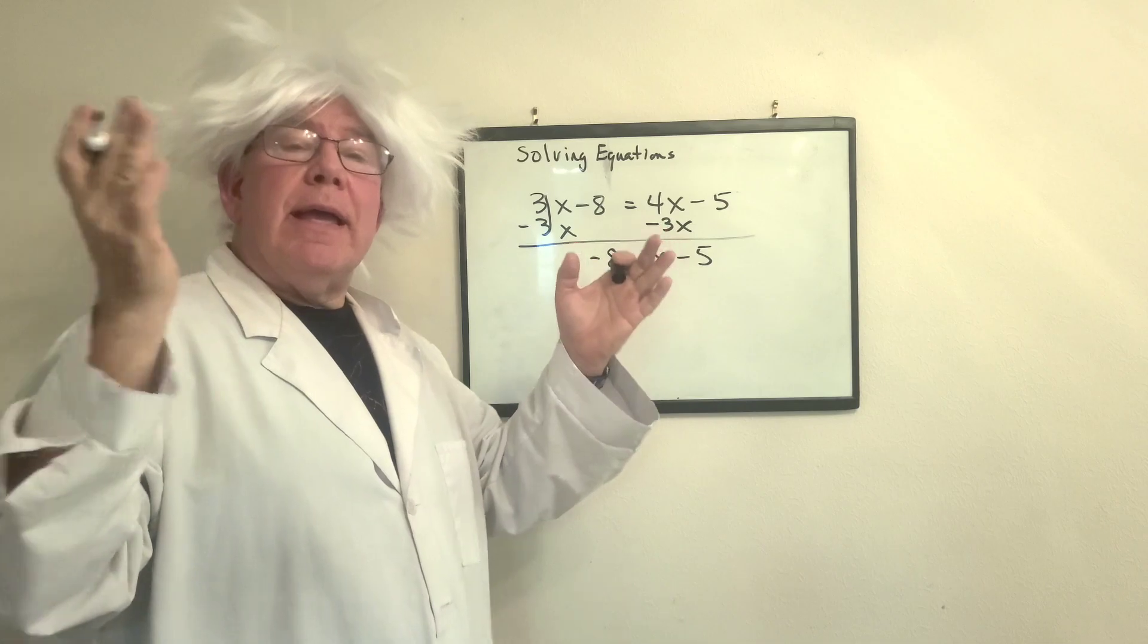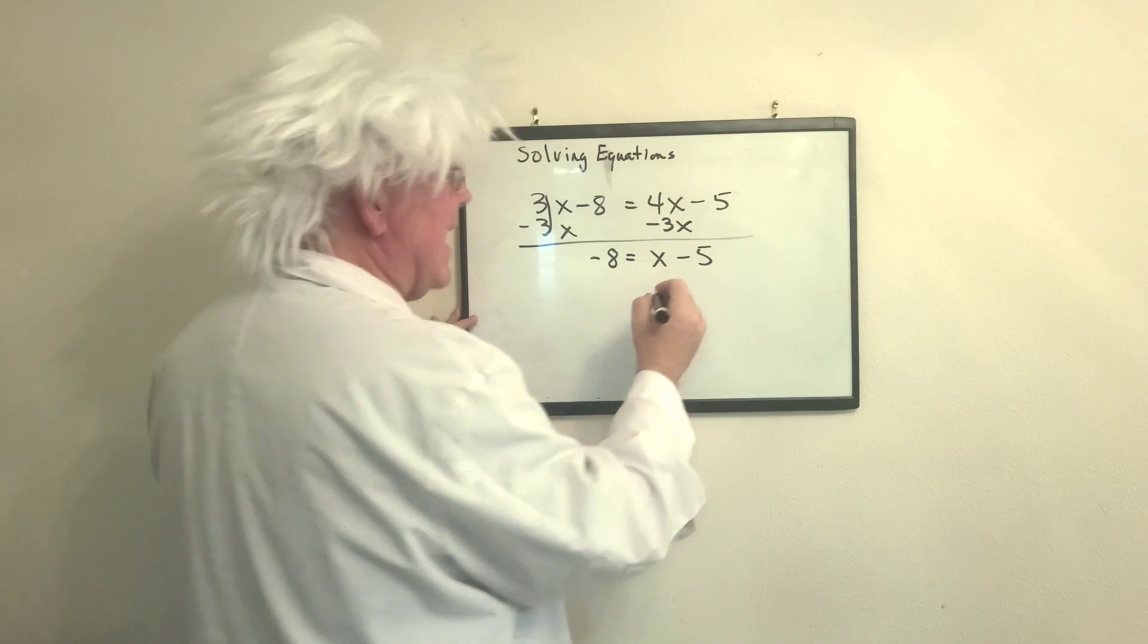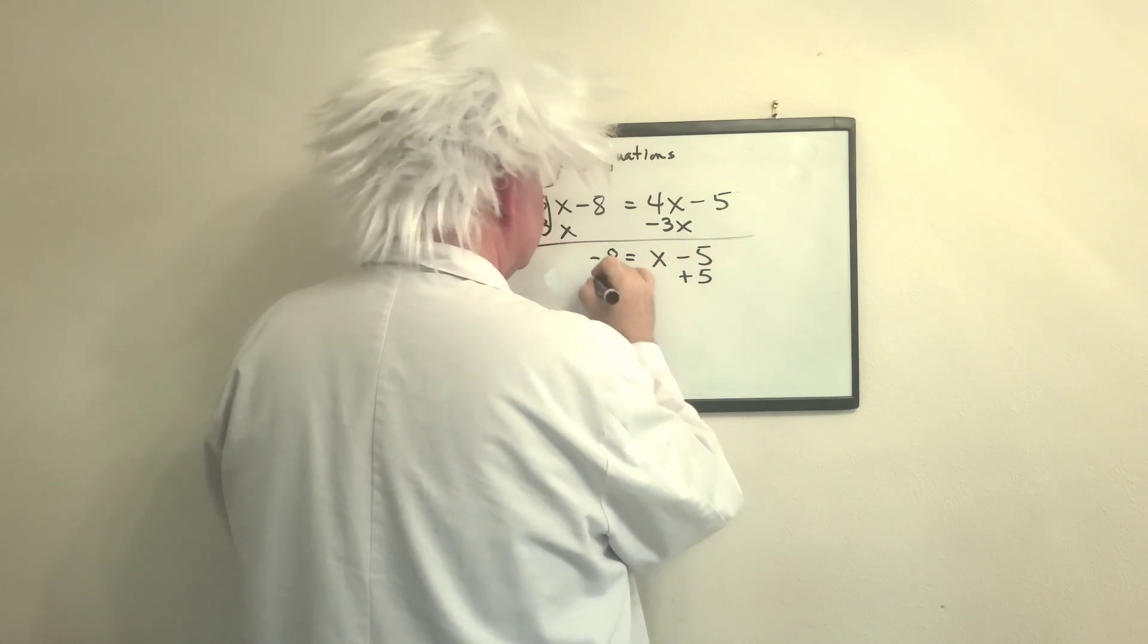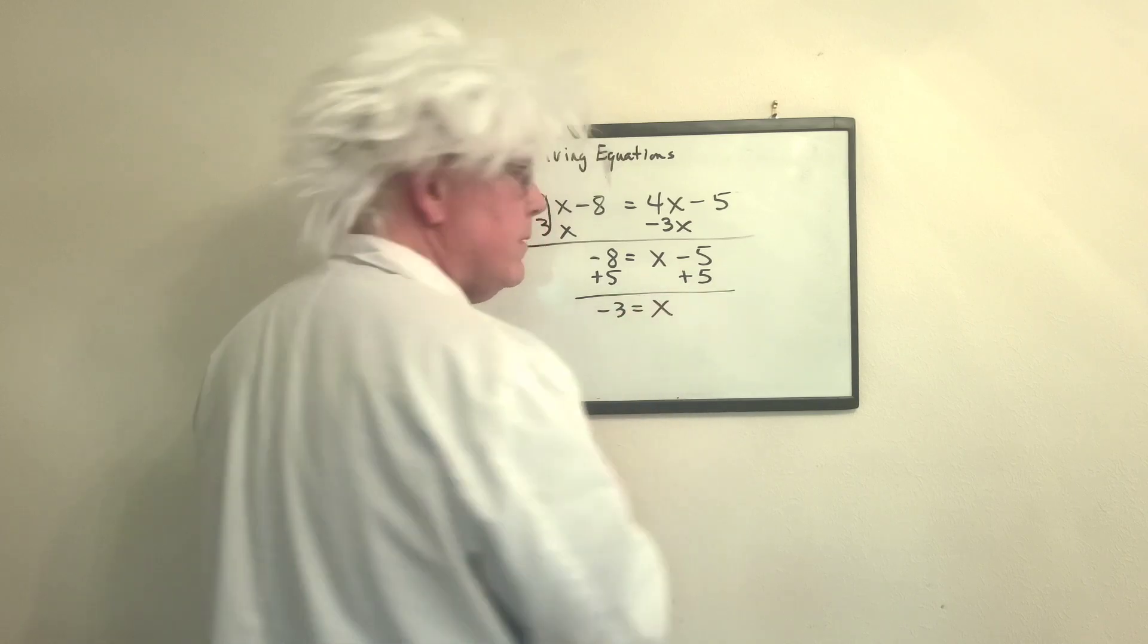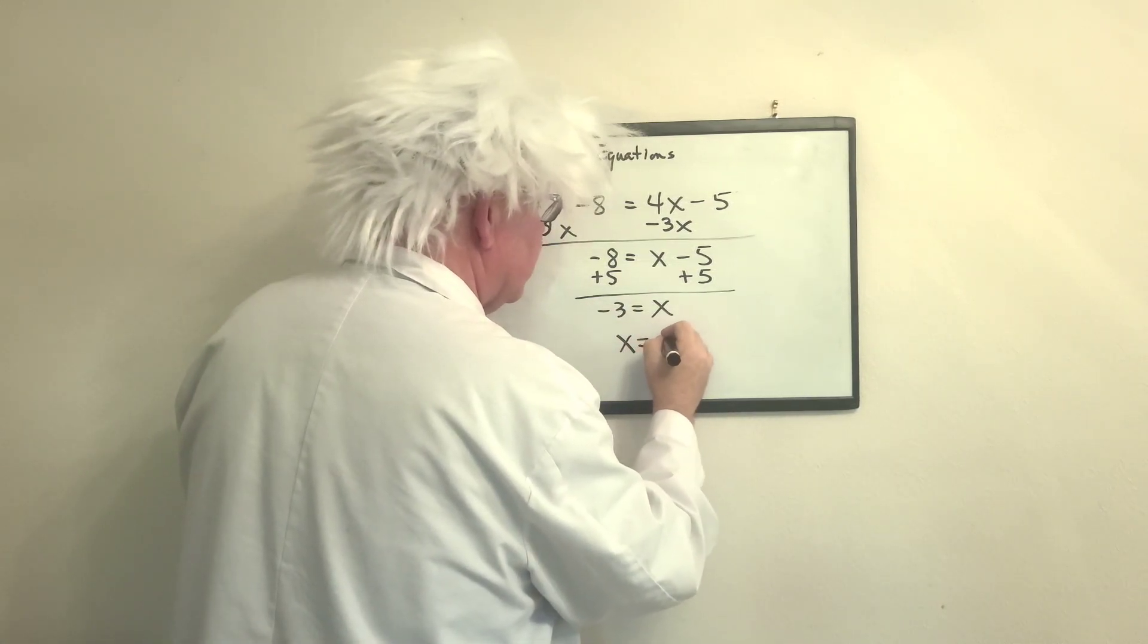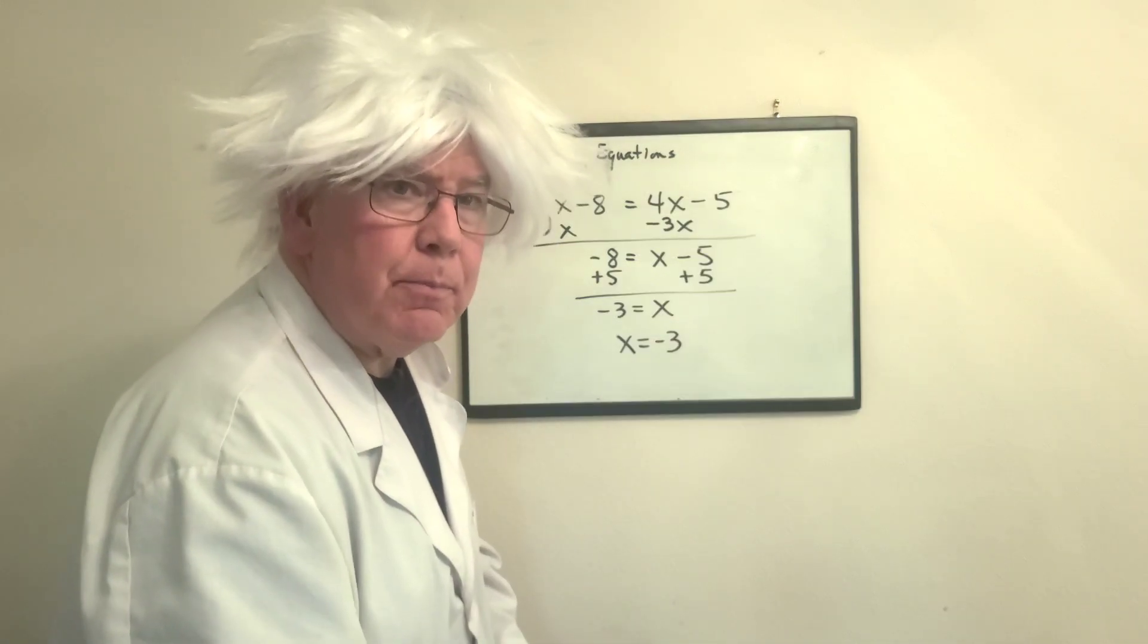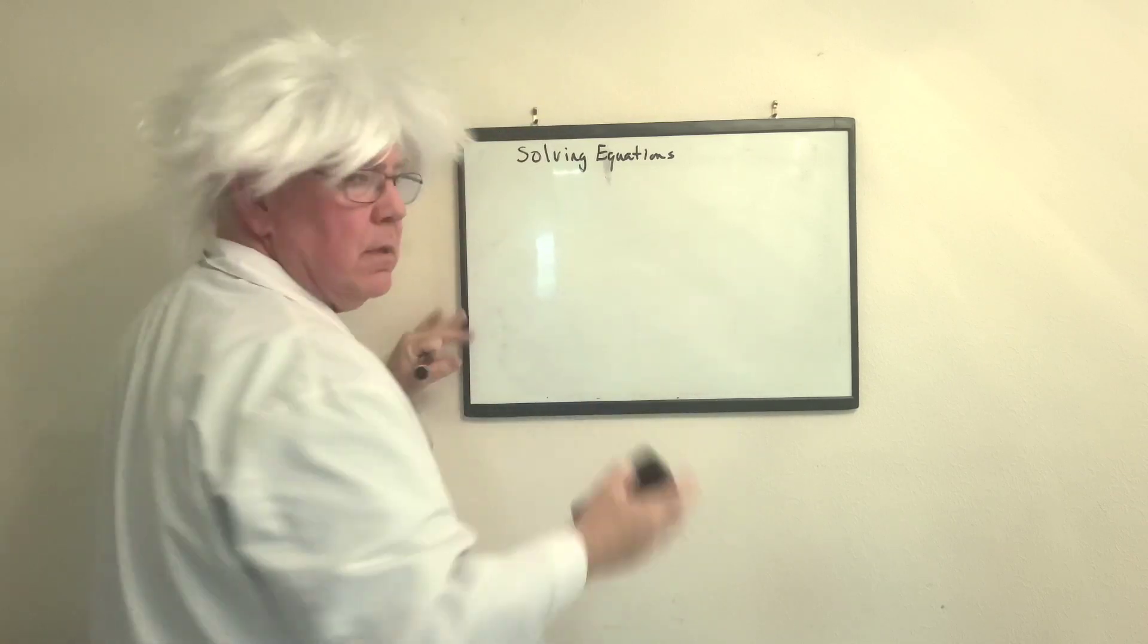Now, in a previous video, we talked about undoing subtraction with addition, so we're going to add 5 to both sides. Now, on my answer, we can switch this around by using the symmetric property and x equals 3. Now, this is a simple one, so I'm going to show you a little bit more complicated one, all right?